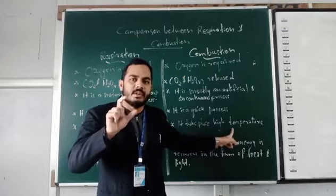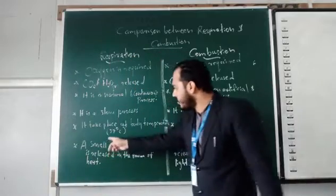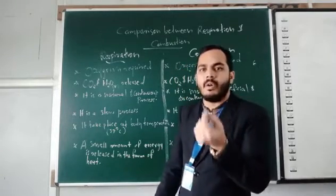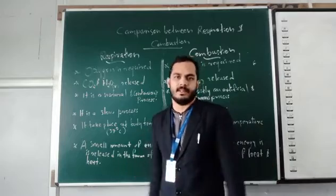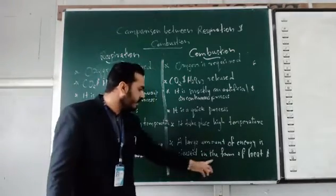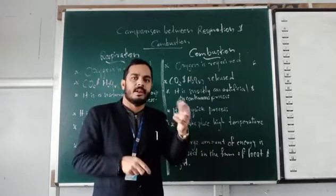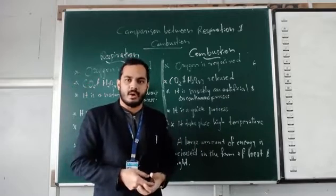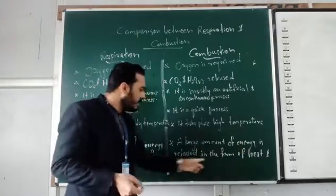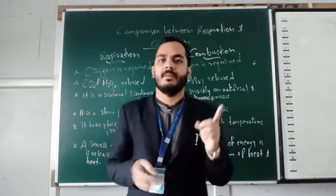Combustion takes place at high temperature. Sixth point: During respiration, a very small amount of energy is released in the form of heat. During combustion, a large amount of energy is released in the form of both heat and light. During a fire, we can easily identify that heat energy and light energy are released. This is the basic difference between respiration and combustion.